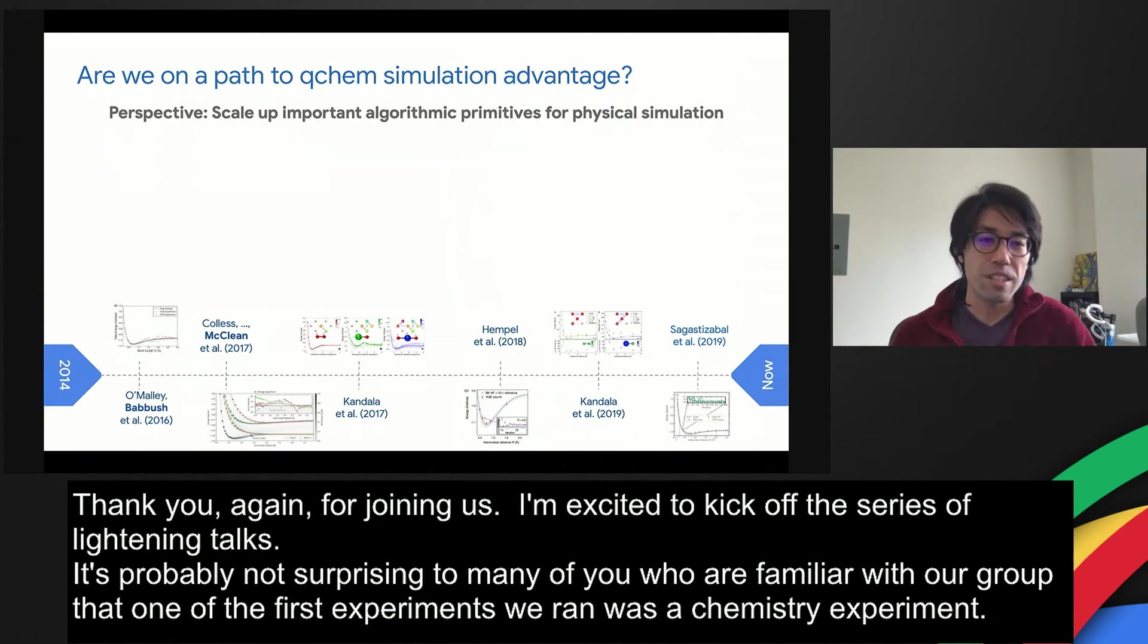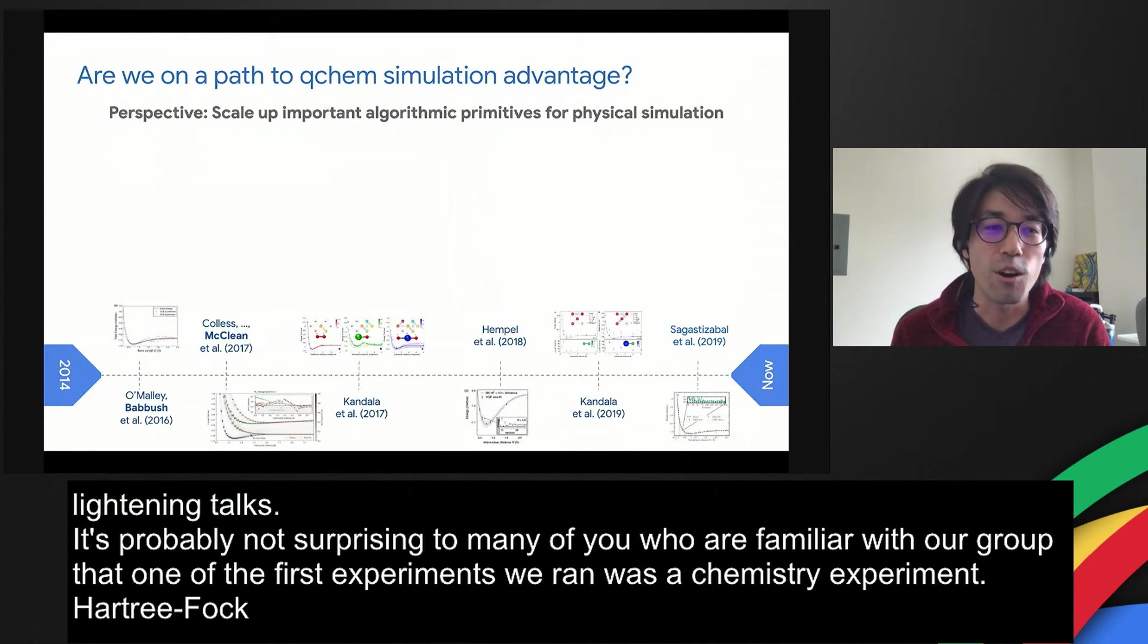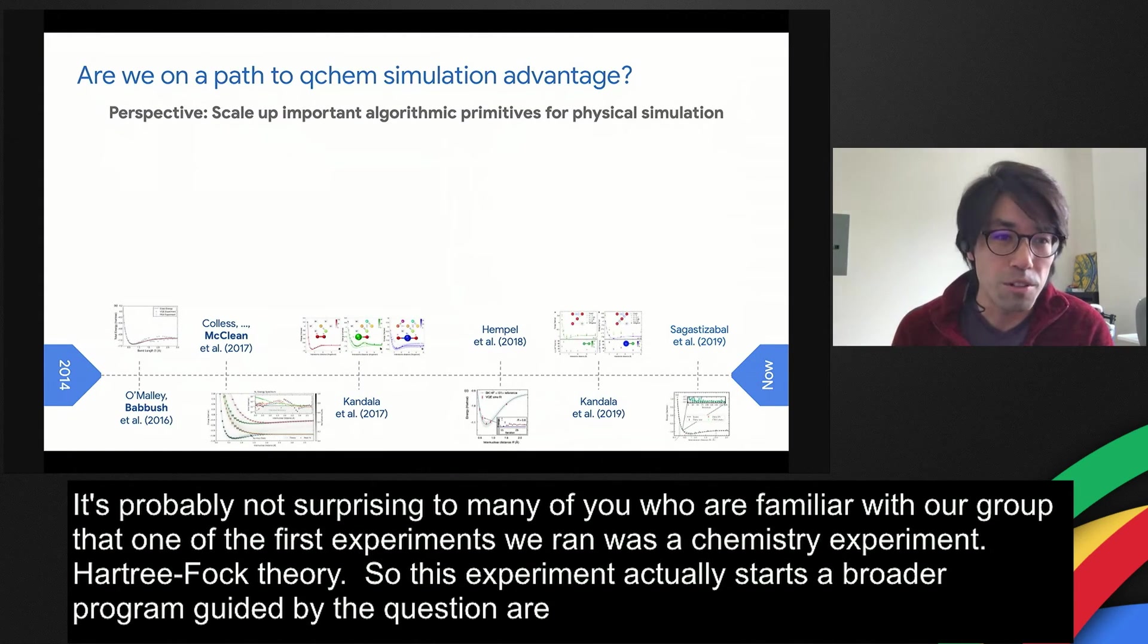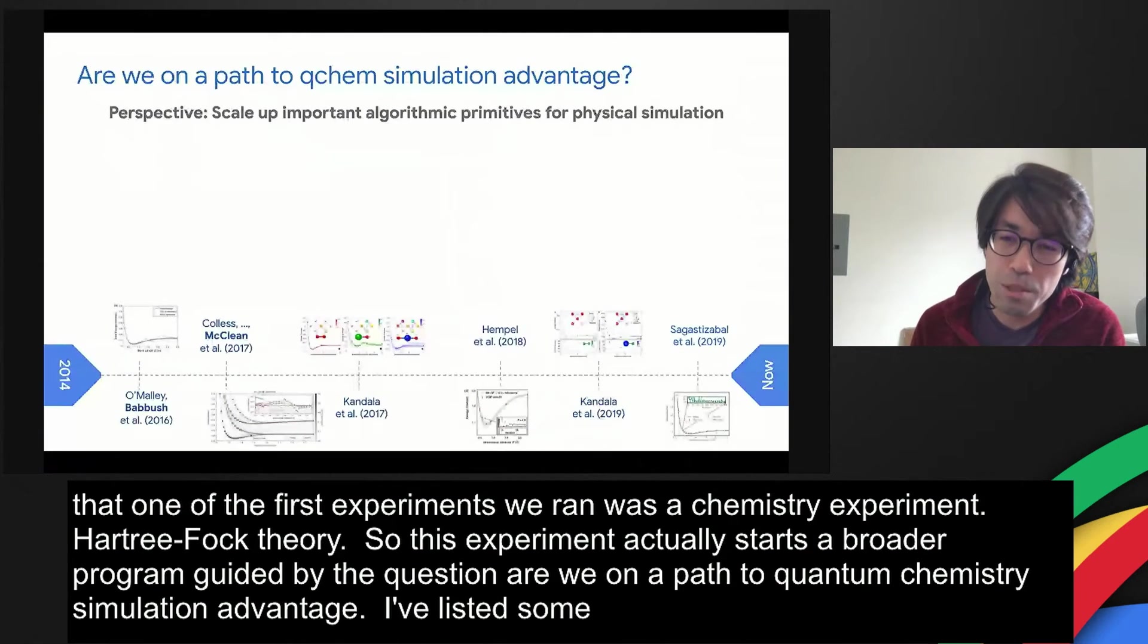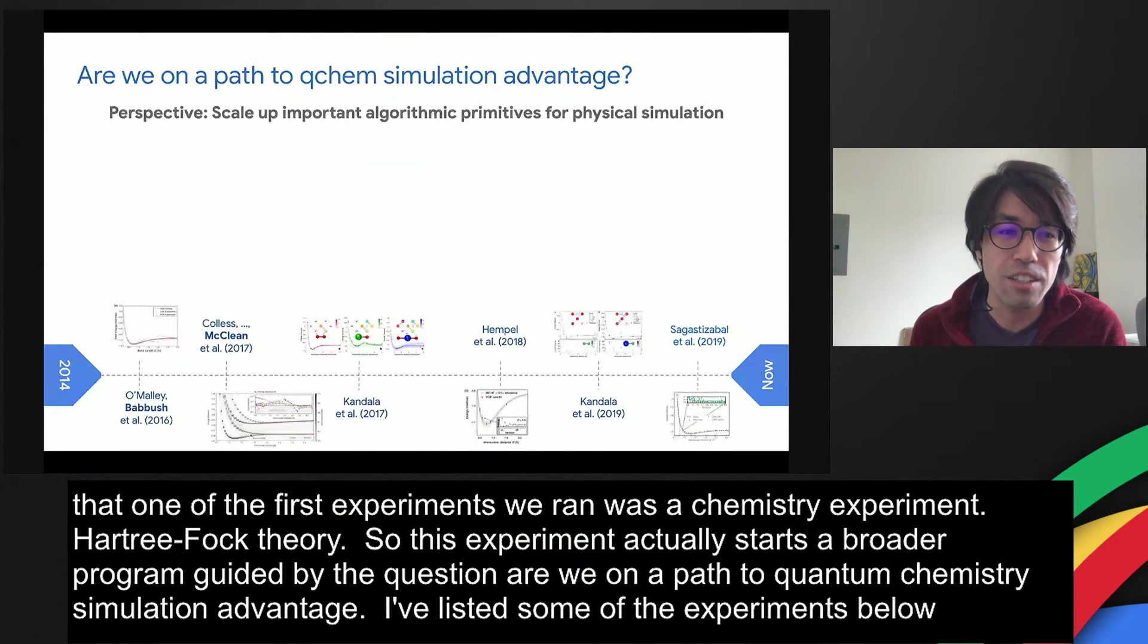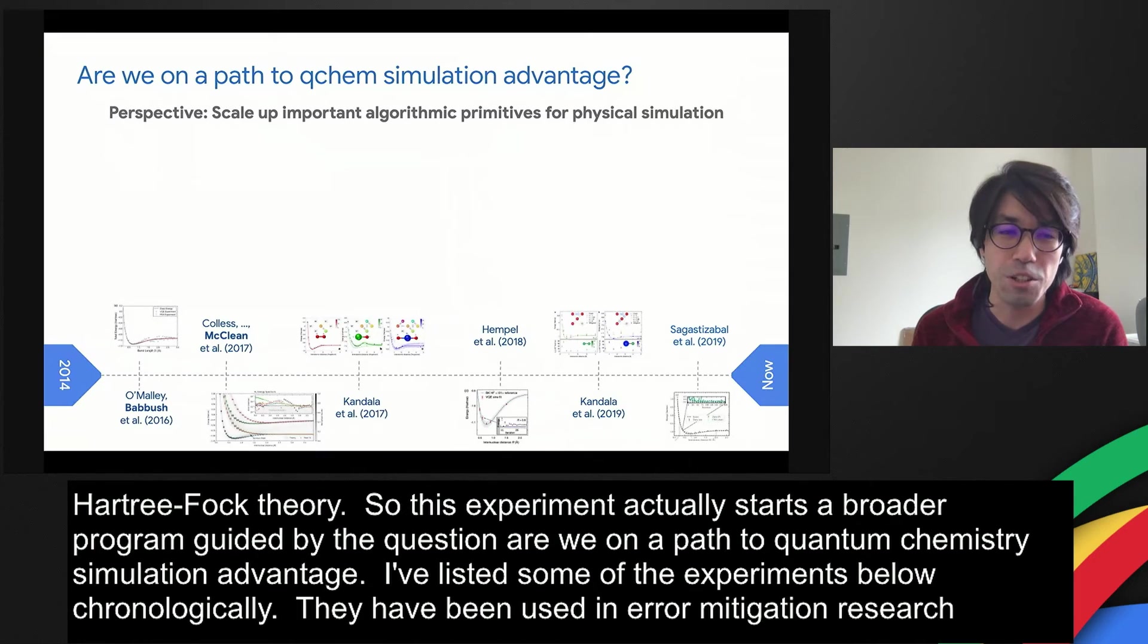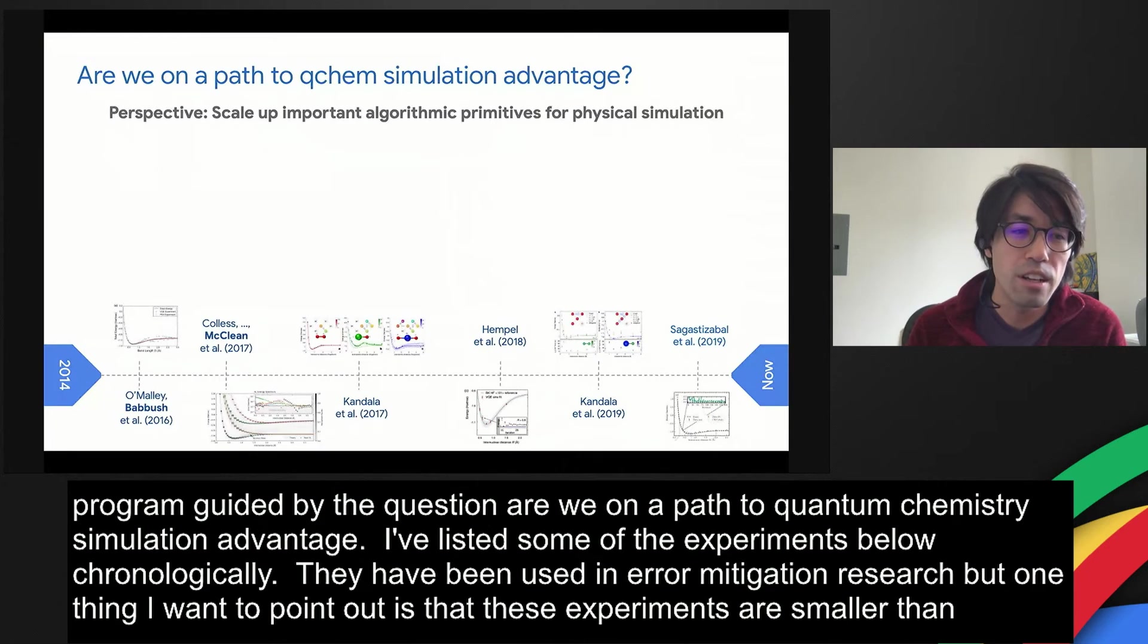This experiment actually starts a broader program, which is guided by the question: are we on a path to quantum chemistry simulation advantage using a quantum computer? There's certainly been a lot of buzz around simulating chemistry and experimental demonstrations. I've listed some of the experiments below chronologically, and these experiments have been used as a litmus test for hardware and determining directions for algorithms and error mitigation research. But one thing I want to point out is that all these experiments are smaller than six qubits, and they just barely reach the accuracies needed to resolve chemical mechanisms.